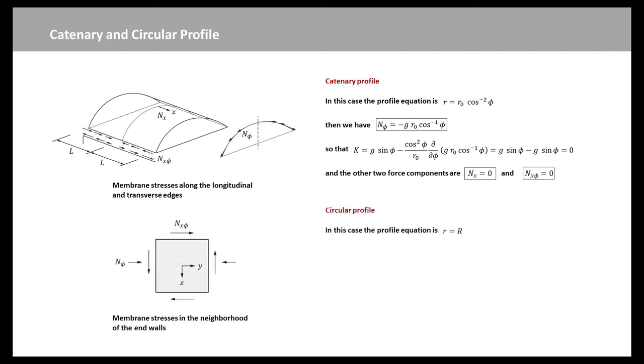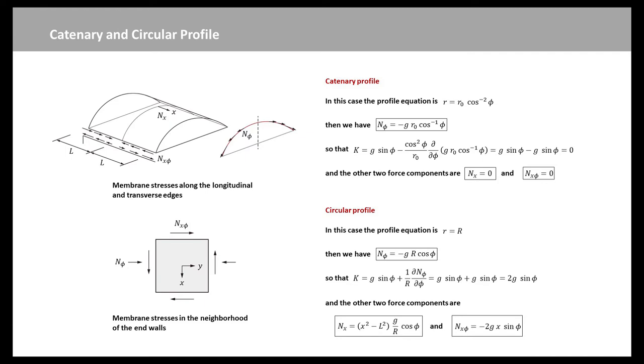In the circular case, the profile equation is expressed here. Then we substitute the R equation into N_phi equation, so that we will have the N_phi expression for the circular profile. Then we can substitute R and N_phi into k equation, and obtain k equals 2 times g times cosine phi. Thus, the other two force components Nx and Nx_phi are shown here.